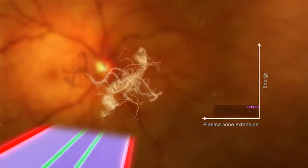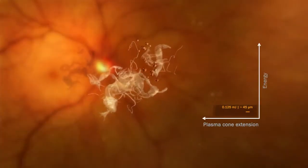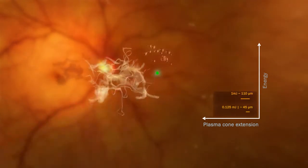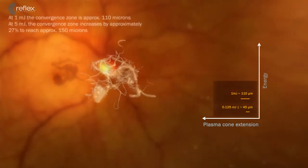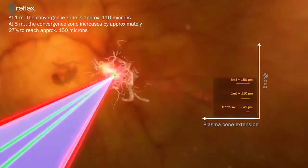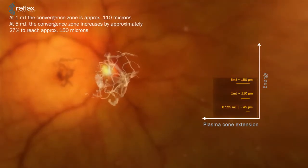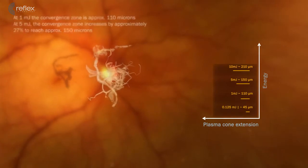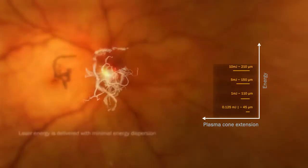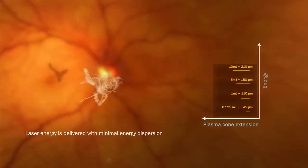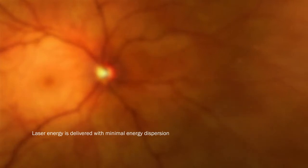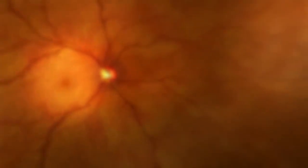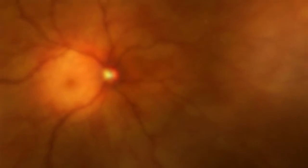It is recommended to start with a low level of energy and titrate up until there is adequate vaporization of the floater collagen. With Reflex technology, the plasma formation is tightly controlled, ensuring a nonlinear rise in energy. As a result, the laser energy is delivered to the targeted floater with minimal energy dispersion into surrounding tissues.